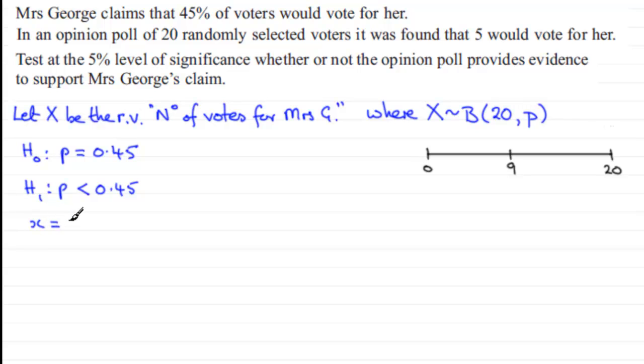We're basing this on an observation x which is 5, and we're going to test at the 5% level, so alpha equals 5% or 0.05. There are two ways we can do this - one is the method I'm going to show you here, the other is by working out the critical value, which is done in another video.